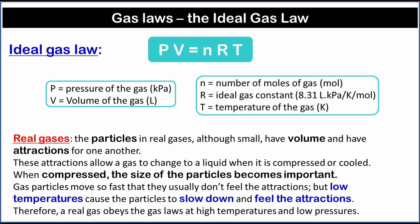The particles in real gases, although small, have volume and have attractions for one another. These attractions allow a gas to change to a liquid when it is compressed or cooled. When compressed, the size of the particles becomes important. Gas particles move so fast that they usually don't feel the attractions, but low temperatures cause the particles to slow down and feel the attractions. Therefore, a real gas obeys the gas laws at high temperatures and low pressures.